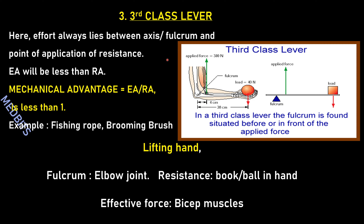Third class lever: here the effort always lies between the axis or fulcrum and the point of application of the resistance. The effort arm will be less than the resistance arm, and the mechanical advantage (EA/RA) is less than one. Examples include a fishing rod, a grooming brush, and lifting a hand. The human example is a biceps curl: the fulcrum is the elbow, the resistance is the ball, and the effort force is provided by the biceps.